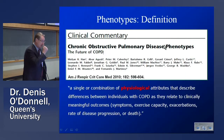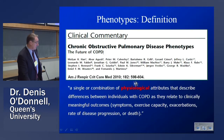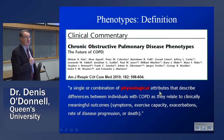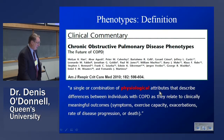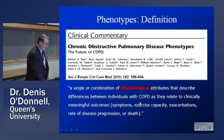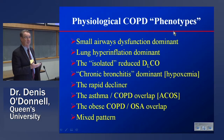A phenotype definition — a single or combination of physiological attributes that describe differences between individuals with COPD as they relate to clinically important outcomes. The ones we've been interested in are symptoms and exercise capacity. In our clinic, we can easily identify a whole number of phenotypes. These are candidates — none of them validated — but we identify with them because we see them on a regular basis.